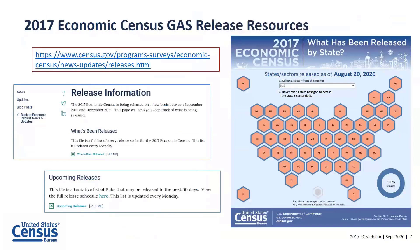Here are some geographic area statistics resources. The link in the red border takes you to a page where you can obtain information on what's been released as well as upcoming releases. You'll also see a handy interactive map on the page — fully filled hexagons indicate data for a selected sector has been released for that state, and the donut-shaped graph in the lower right tells you the percentage of data released. Even though the series is now completed, this visualization is still useful as it provides deep links into data.census.gov by state and sector.